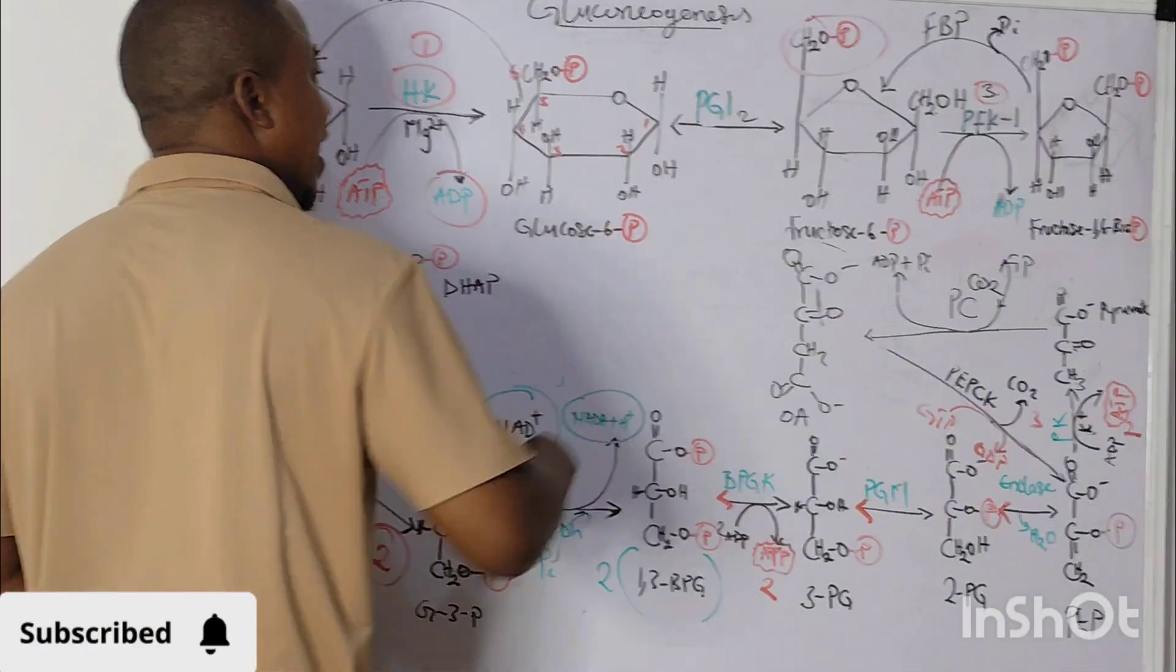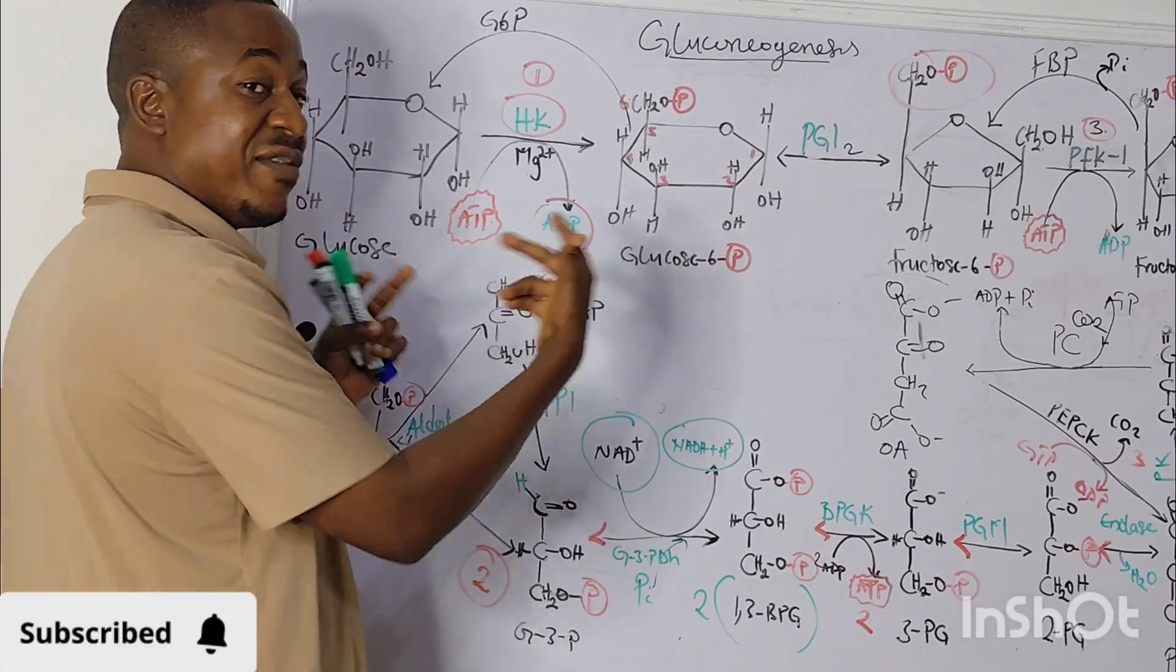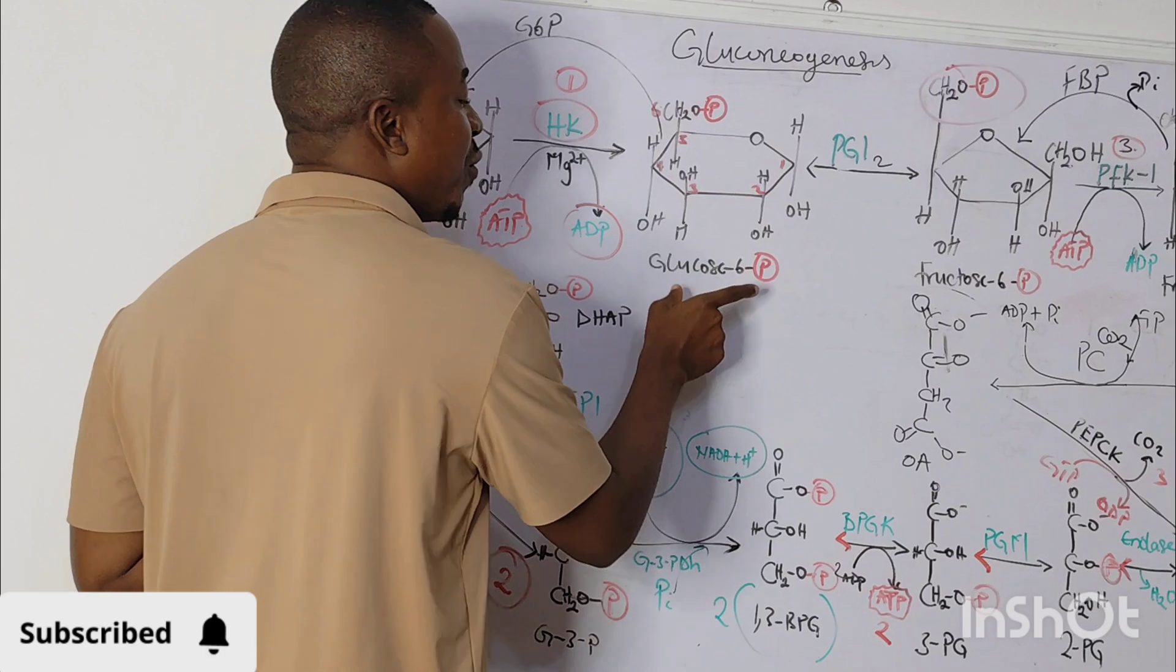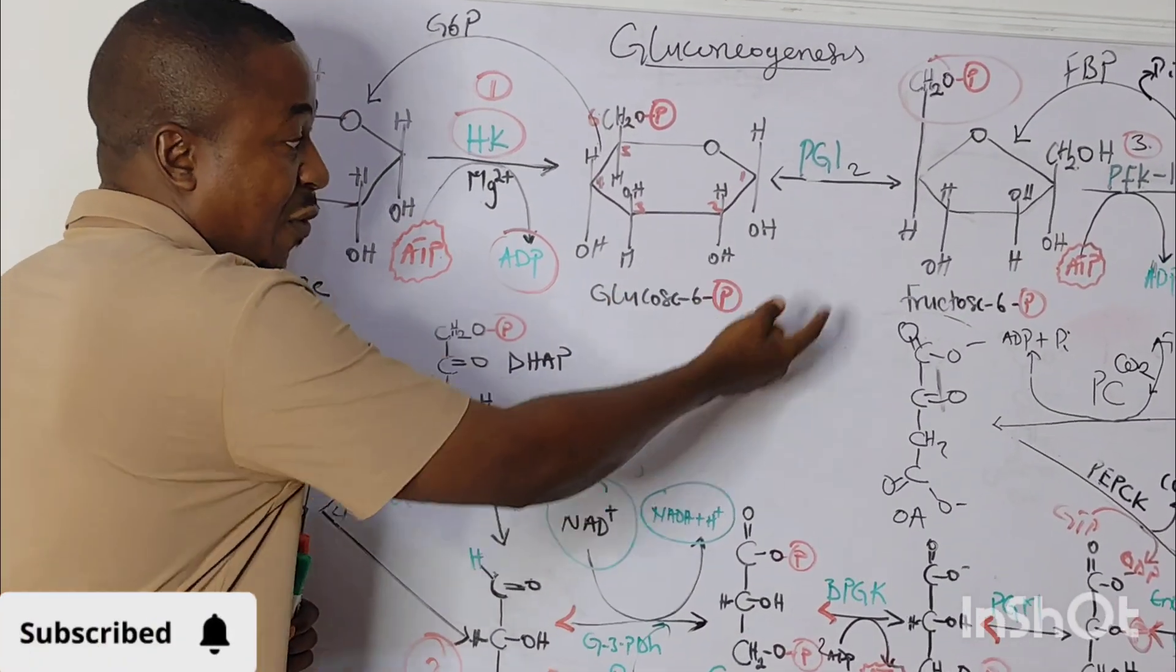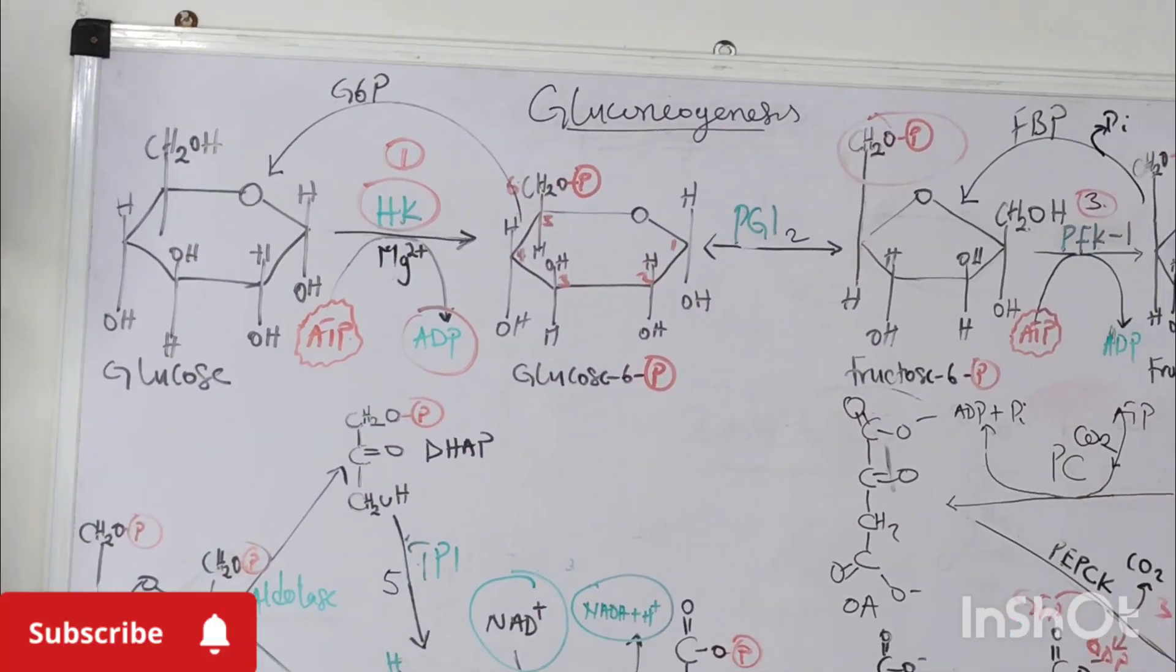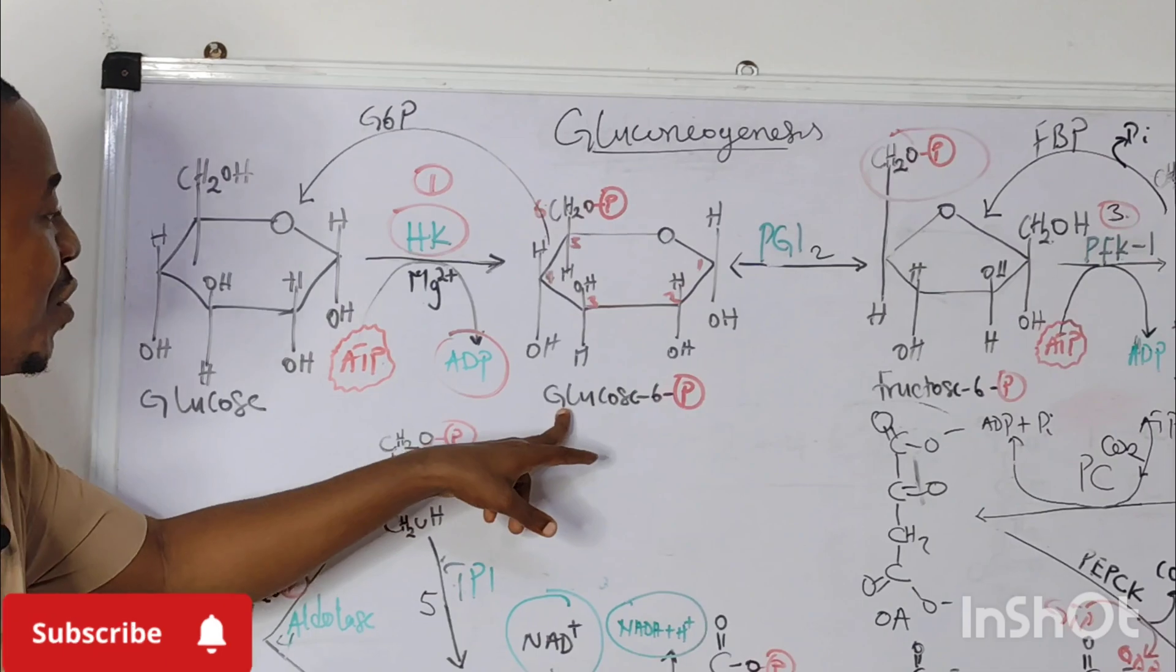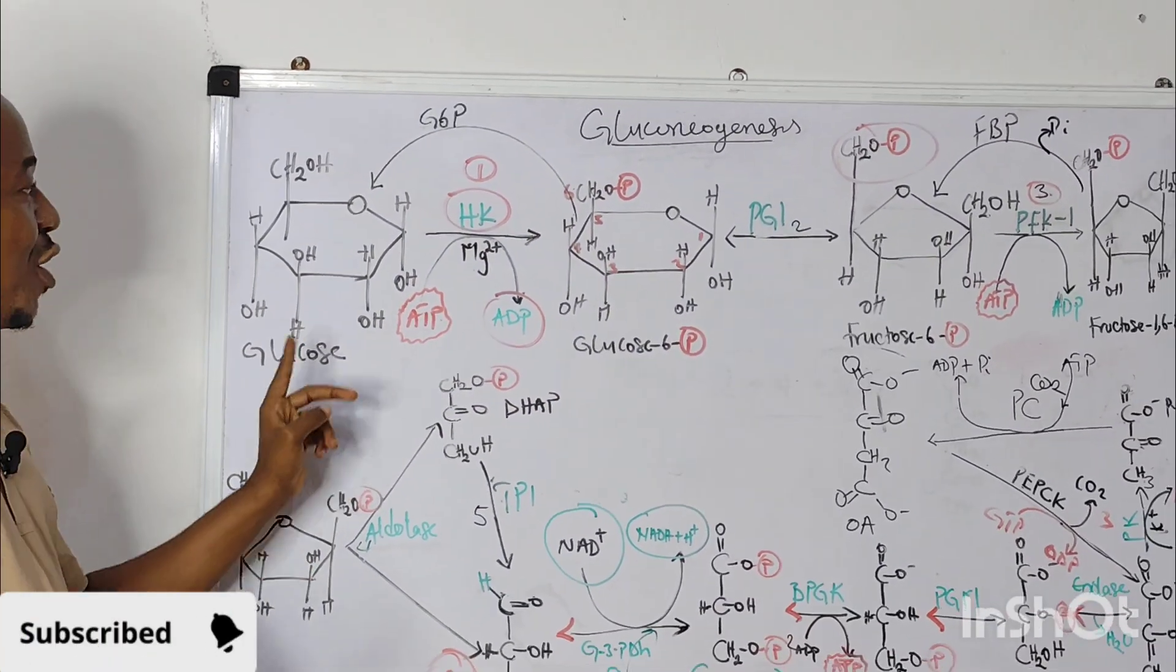So once you get the fructose-6-phosphate, the next enzyme, which is phosphoglucoisomerase, which is a reversible process, will convert the fructose-6-phosphate to glucose-6-phosphate. So this glucose-6-phosphate that is produced now has to be converted to glucose.